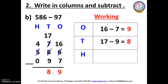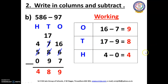Now we are going to do the 100's place. Here we have 0 and 4. We can subtract 4 minus 0. Open your fingers: 0 after — 1, 2, 3, 4. How many fingers have you opened? Yes, we have opened 4 fingers. So we have to write 4 here. The difference between 586 and 97 is 489.